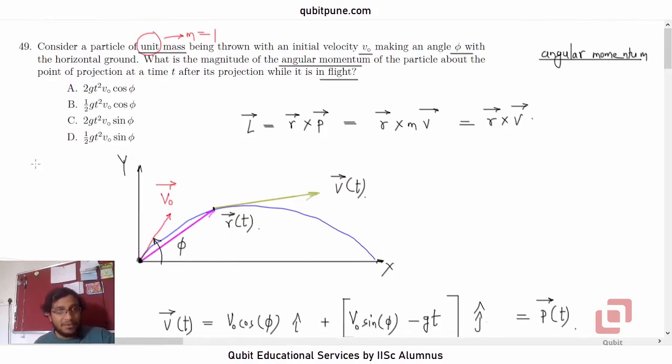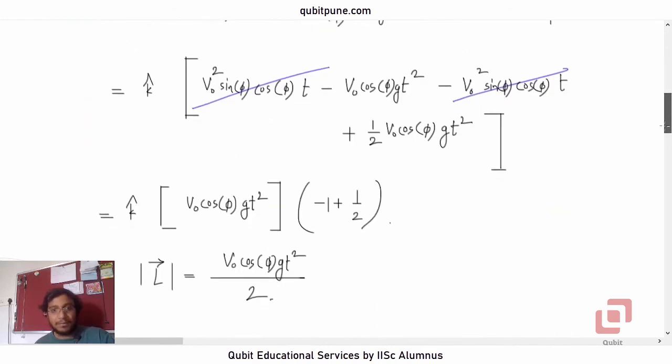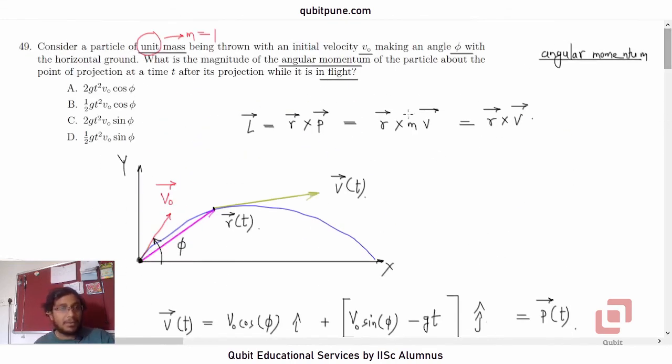So do we have that option? There are two options having half there. And I think it is cos phi that we have got. V naught cos phi g t squared by 2. That is option B.